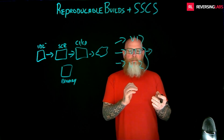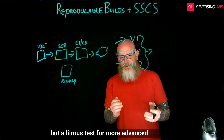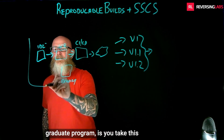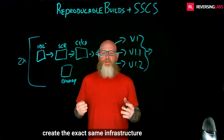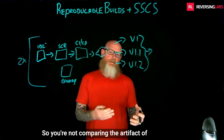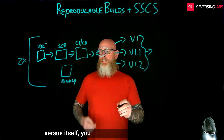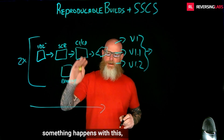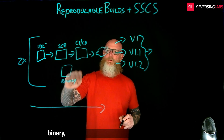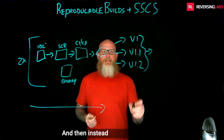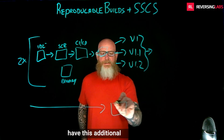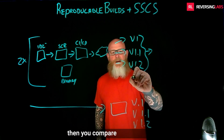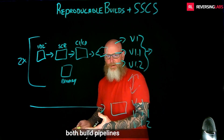It's great from looking at the package standpoint, but a litmus test for more advanced usage of software supply chain programs — more of a graduate program — is you take this entity and create the exact same infrastructure for your build. So you're not comparing the artifact of one pipeline versus itself. You actually have an additional flow. If this pipeline is somehow compromised, you have an identical pipeline with the same IDE, source code repository, binary, CI/CD, deployment, and cloud mechanism. Then instead of comparing versions, you compare the product of both build pipelines against each other.